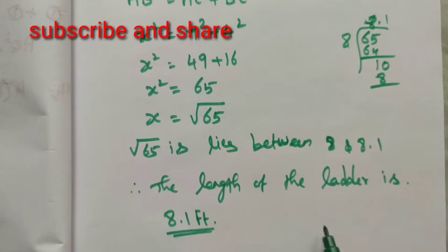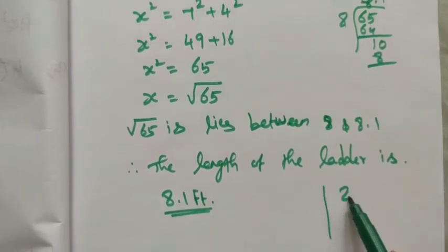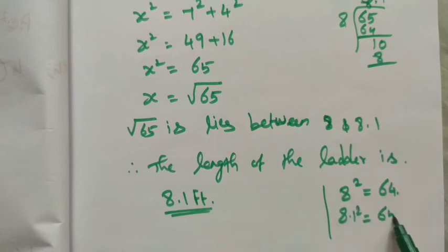Now, if you square 8 you get 64, and 8.1² equals 65.61. Since 65 lies between 64 and 65.61, we take 8.1 feet as the approximate value. Thank you, students.